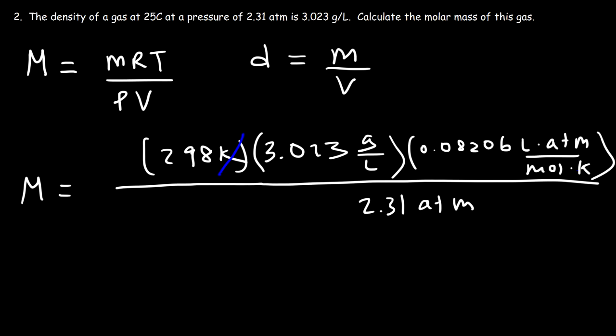So the unit Kelvin cancel, the unit liters cancel as well, and atm. So we have grams per mole, which are the units for the molar mass of a gas. So it's going to be 298 times 3.023 times 0.08206 divided by 2.31. And so the answer is 32.002 grams per mole.